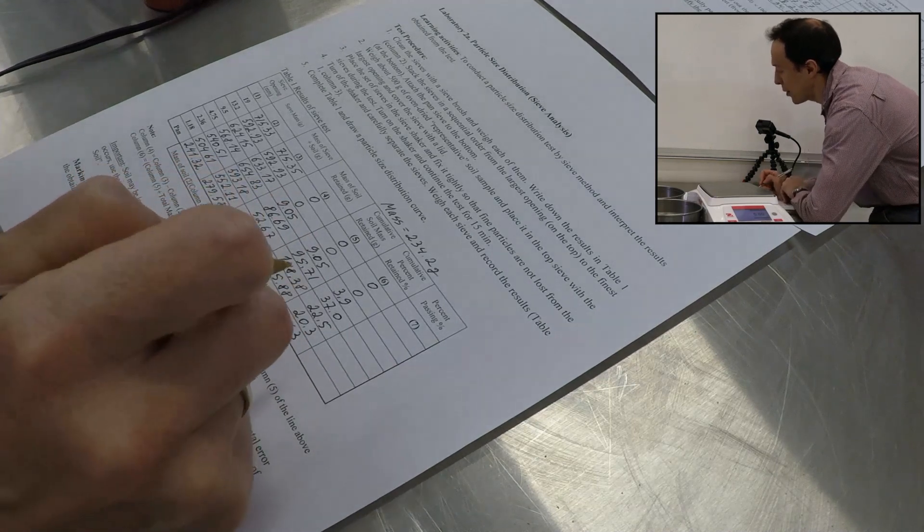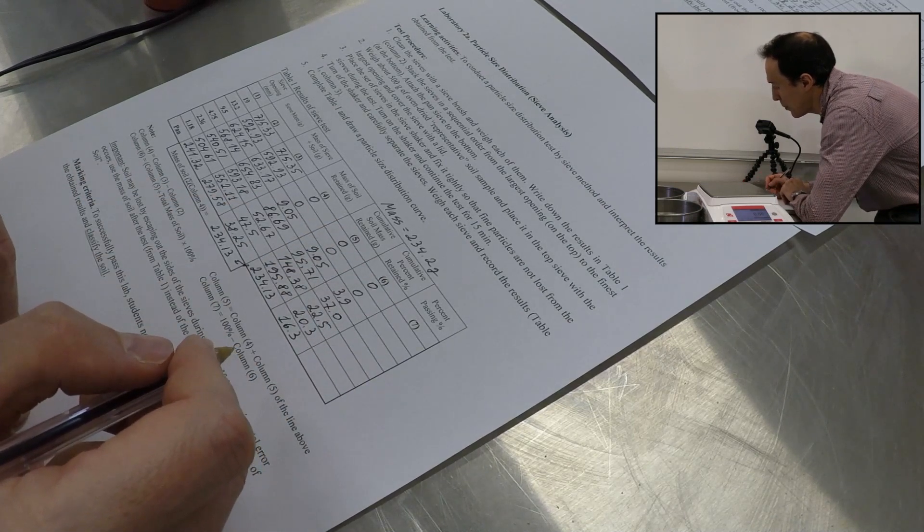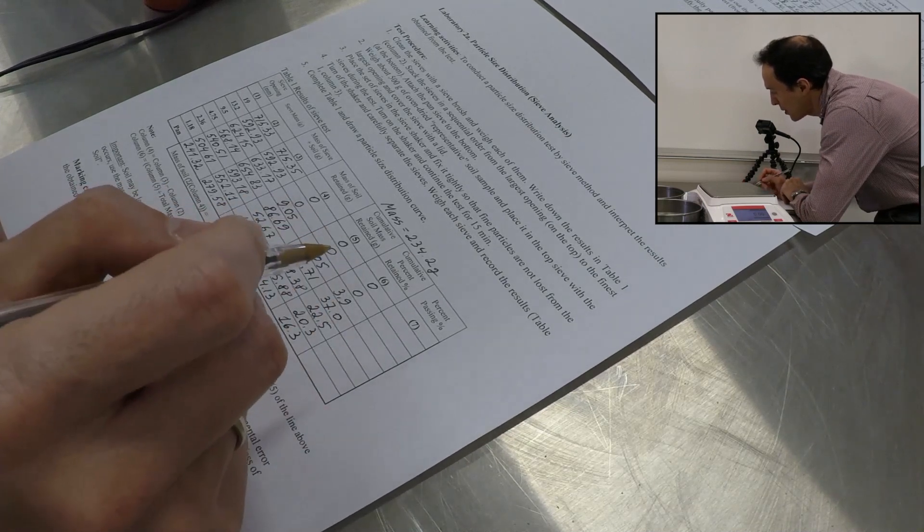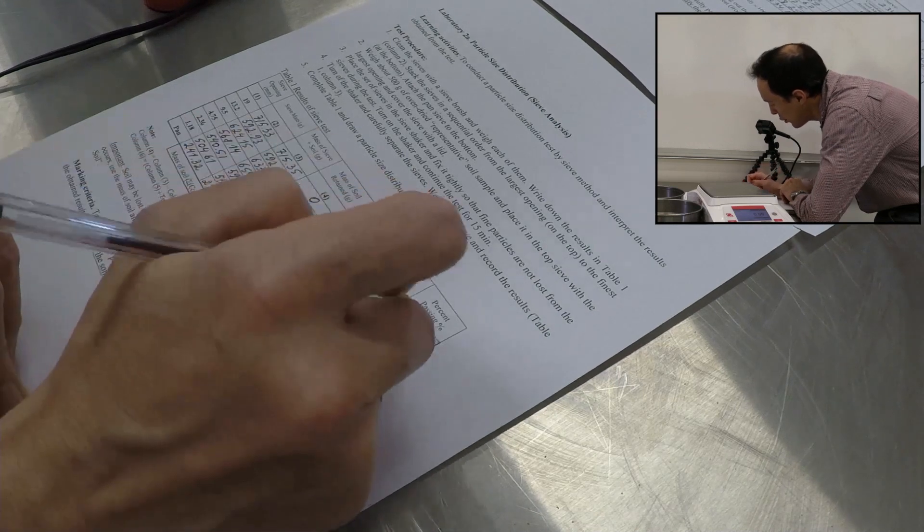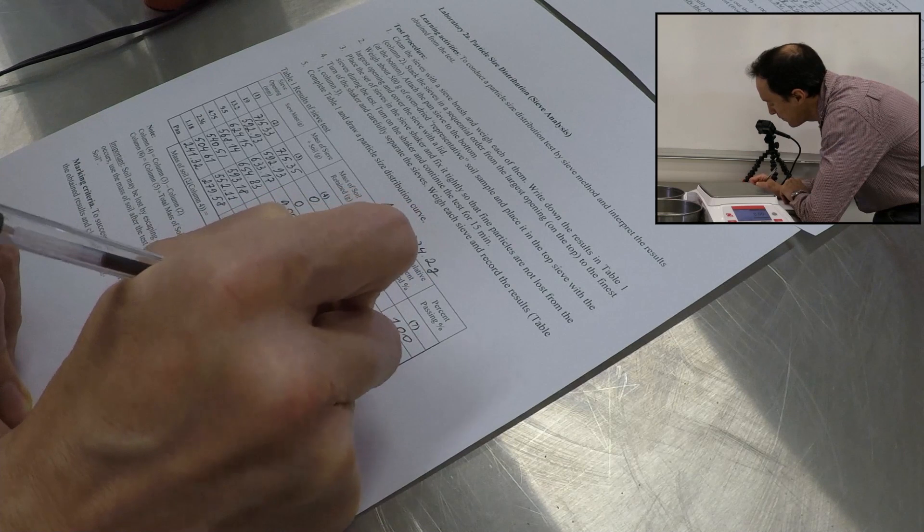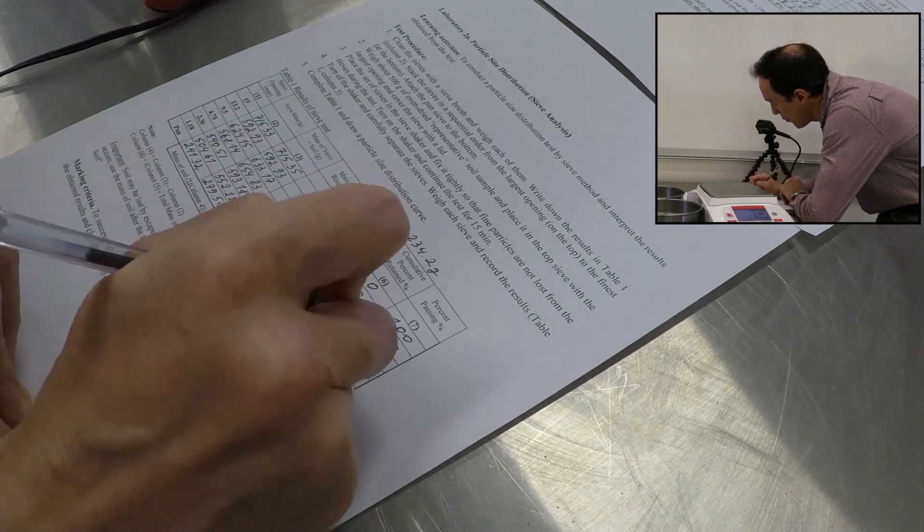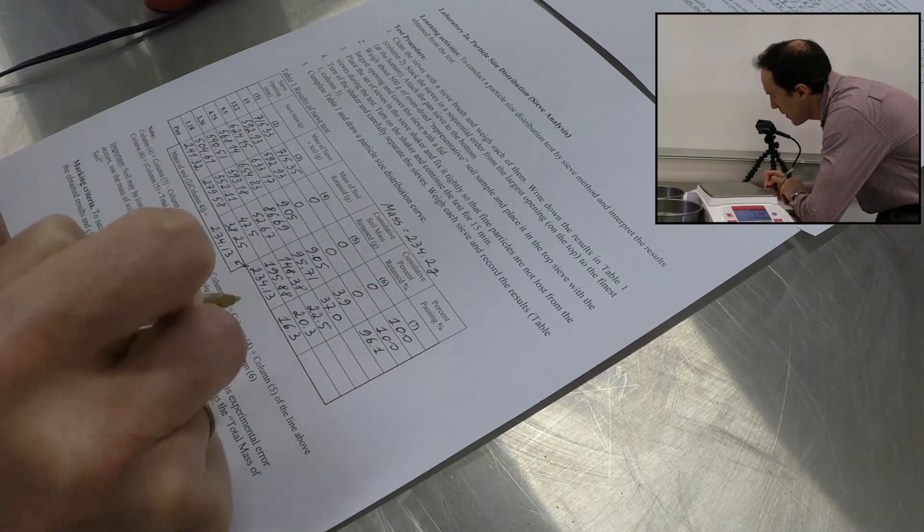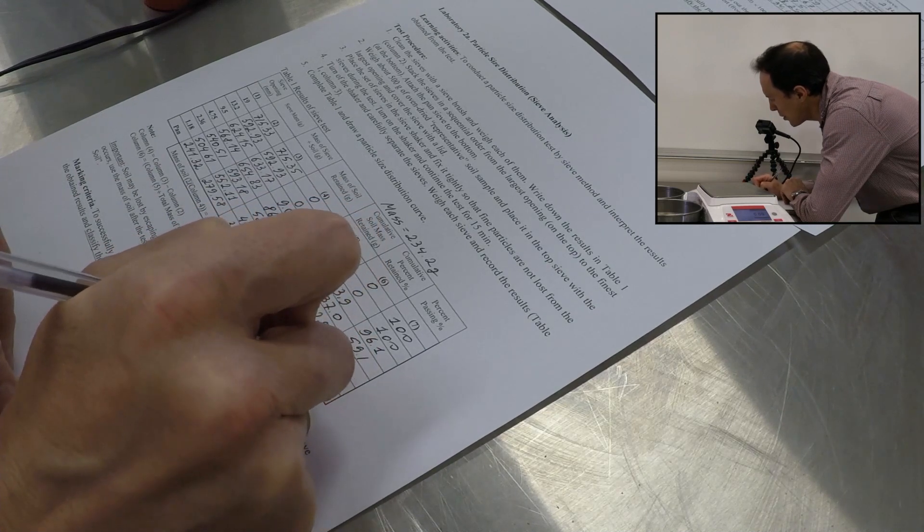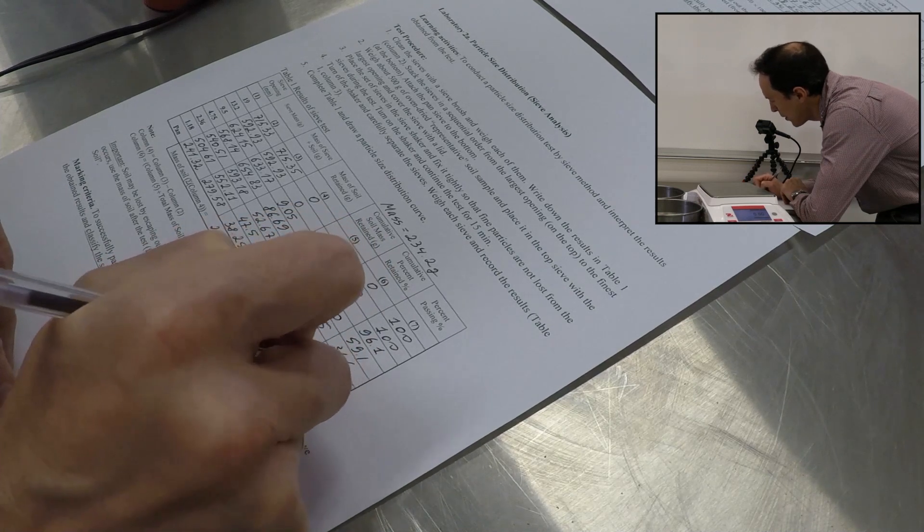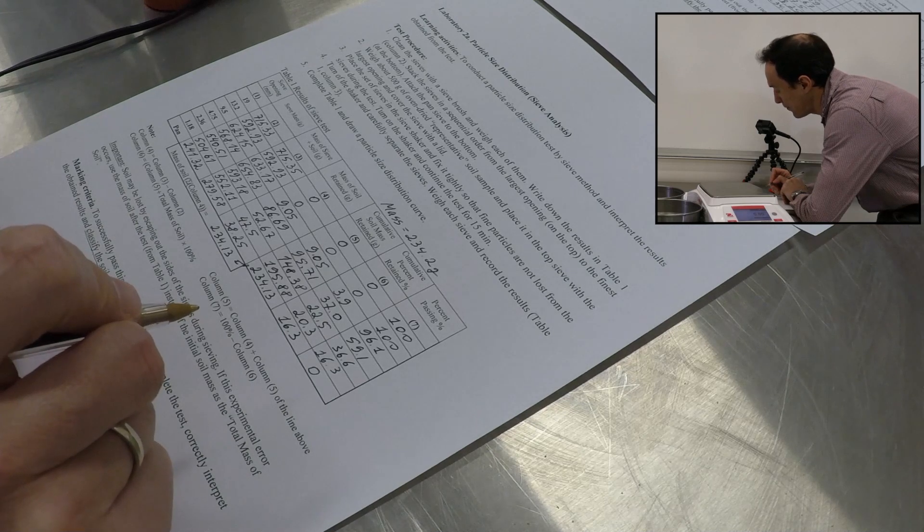And the final column, the most important, the one that we will use to draw a grain size distribution curve, it's column seven percent passing. In this case, we will take a hundred percent and we'll subtract number from column six. For the first two sieves on top, we'll see that percentage, the cumulative percentage was zero. So which means that hundred minus zero will give us a hundred percent. For the next sieve 9.5, we're going to get a hundred minus 3.9, which is 96.1. We'll do the same procedure for the other sieves. Give us 59.1 approximately, 36.6, 16.3. So this is a percentage. I rounded some of these numbers.